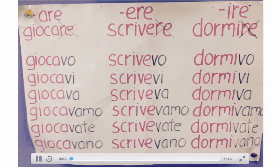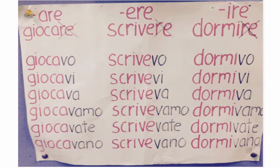Okay, this is what the imperfect tense looks like. So what you do, you go up to GIOCARE — we're actually taking off the R and the E, and we're simply left with GIOCA throughout the whole six people.